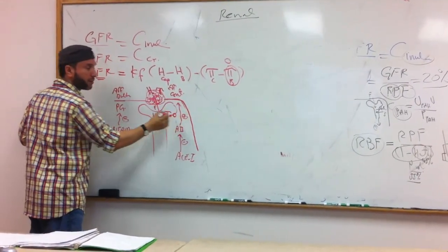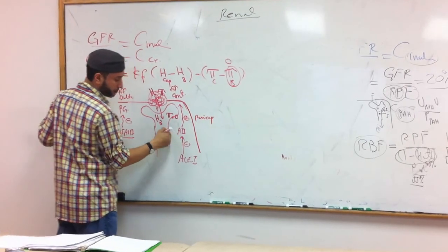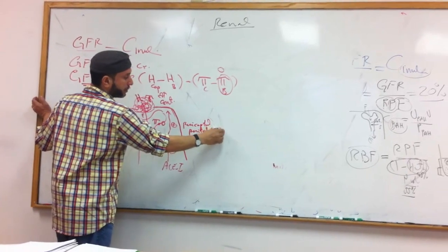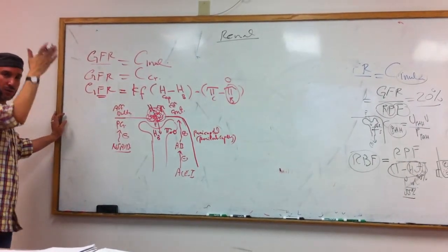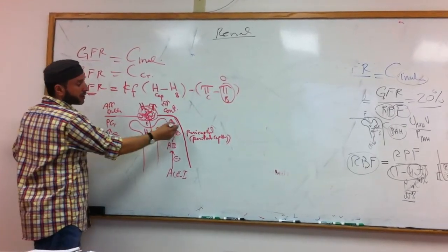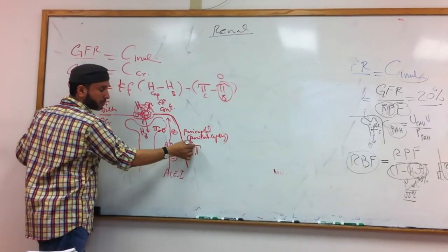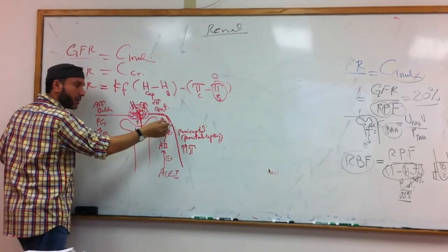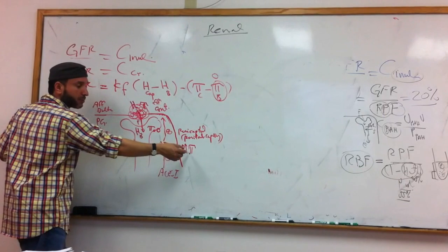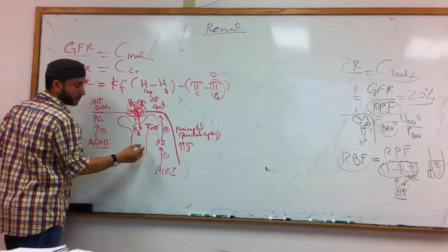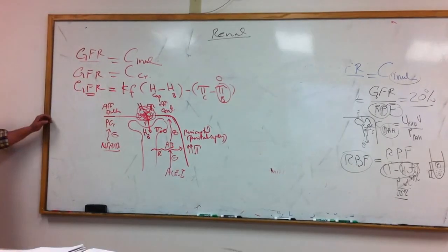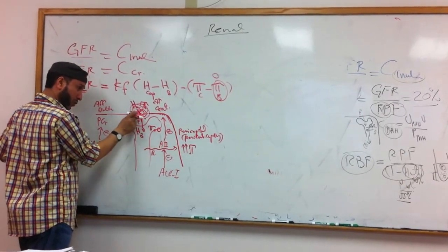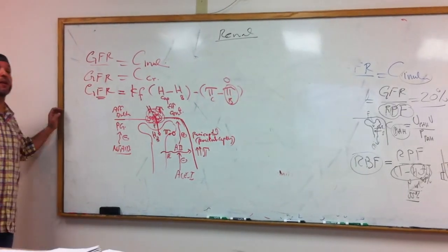When blood goes down into what we call peritubular capillaries — the capillaries that run close to the tubules — oncotic pressure here will be increased. Why will oncotic pressure be increased? Because you are filtering here and keeping proteins. You are building up protein along the course of the peritubular capillaries, so more protein means more oncotic pressure. More oncotic pressure here than in Bowman's — that drives reabsorption.